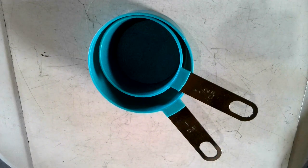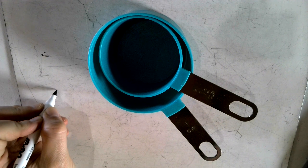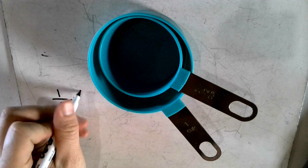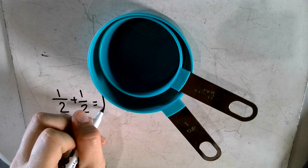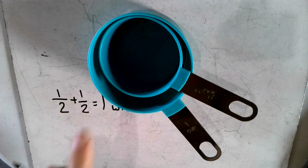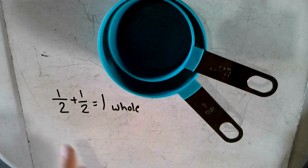Think about the rules of fractions. This is kind of like the video you were watching and understanding. A half plus a half equals one whole. So one whole cup, and then a half plus a half equals a whole.